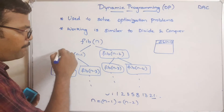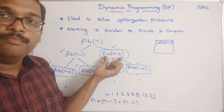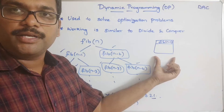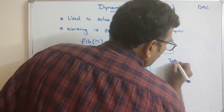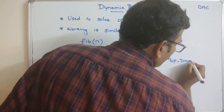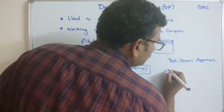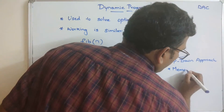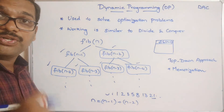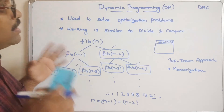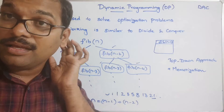These repeated sub-problems are called overlapping sub-problems. The approach of solving from the top and storing results is called the top-down approach, and the process of storing sub-problem solutions is called memoization. The same problem can also be solved using two different approaches: top-down and bottom-up.